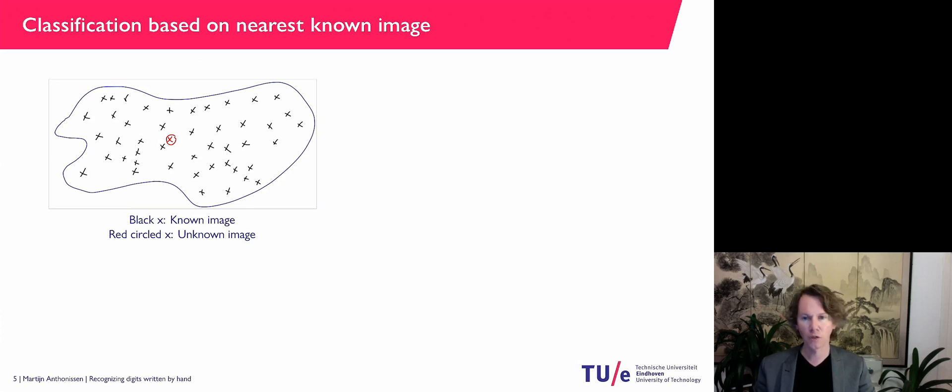And we compute its distance to all of the black crosses. Then we take the one that is closest, so that's going to be here. So this little x is closest to the unknown image. And the digit that is in that photo is how we classify the unknown image.